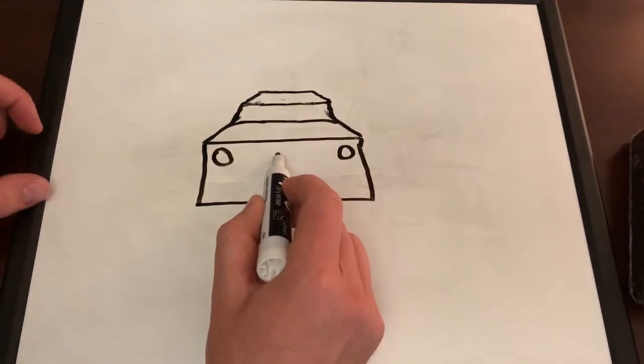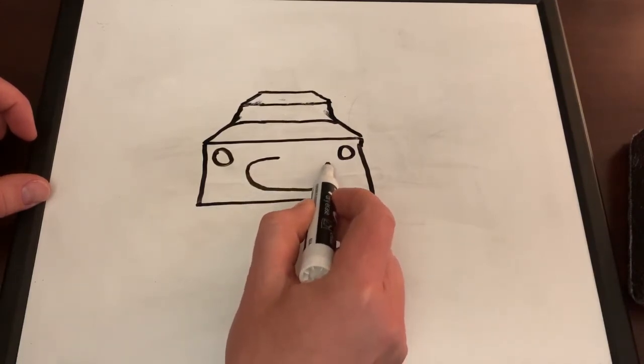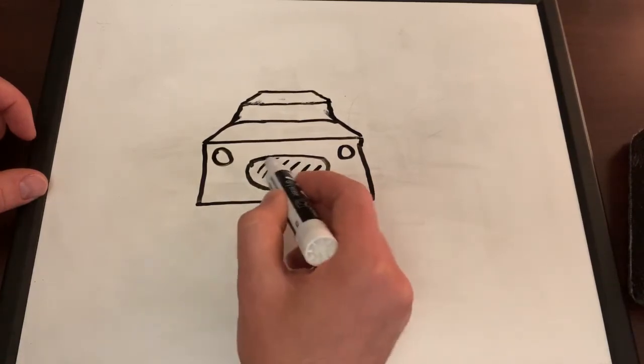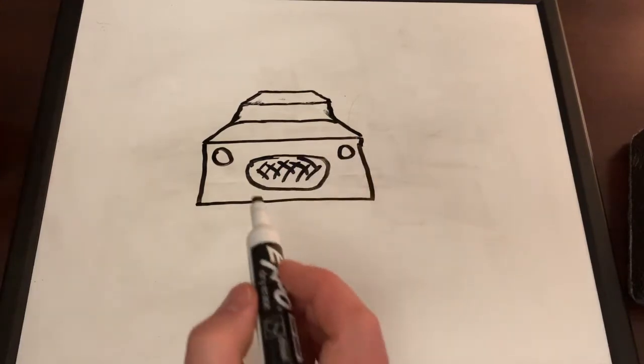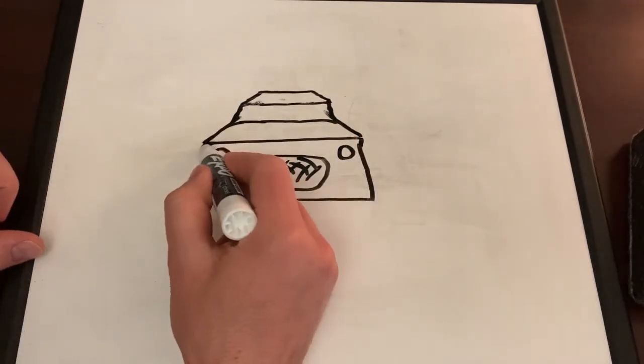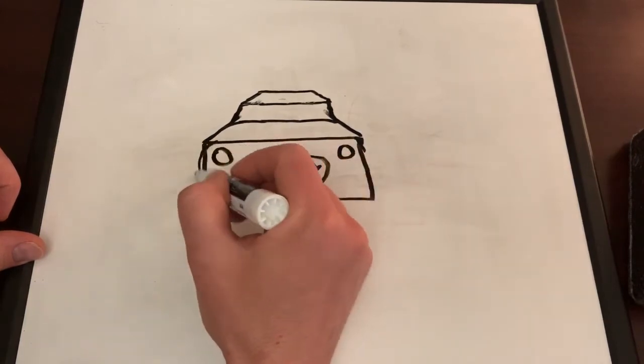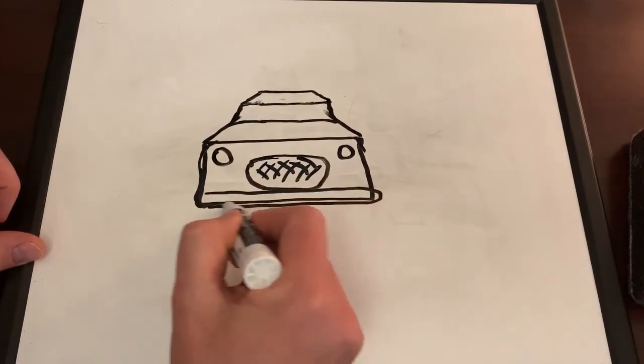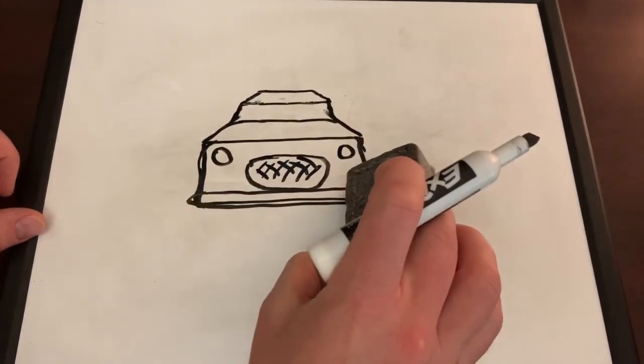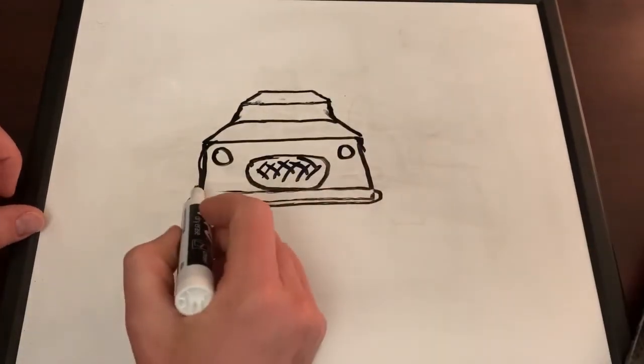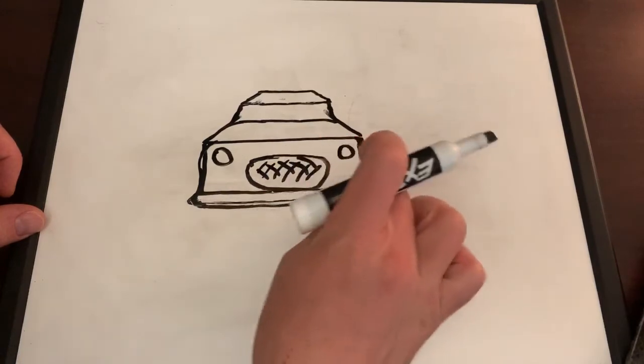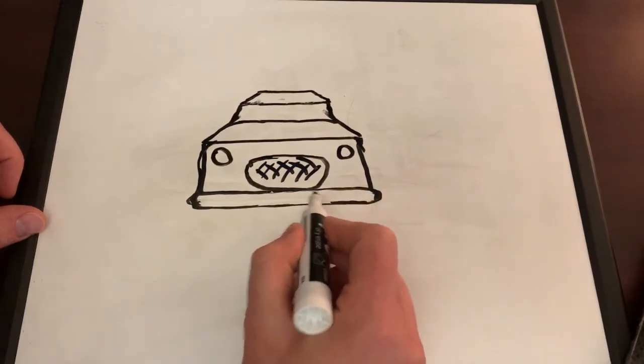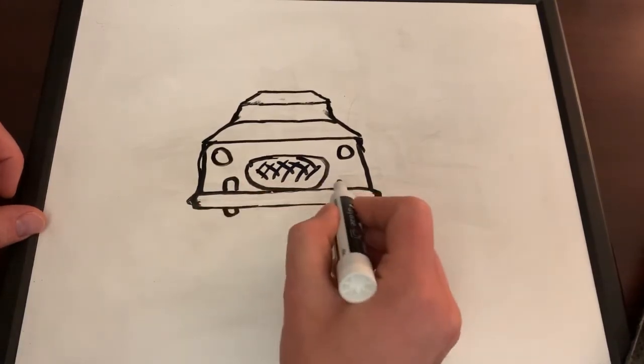Now we'll draw some circles for the headlights, real simple. And if we want, we can throw in the grill here. You can see it doesn't have to be perfect. Add some texture, which is just some lines crossing over each other. Now here we can, if we want, spend a little more time adjusting how we want the front of the car to look. We'll add a bumper, then we can erase to kind of get what it looks like. And then maybe we turn the bumper into a push bumper here.